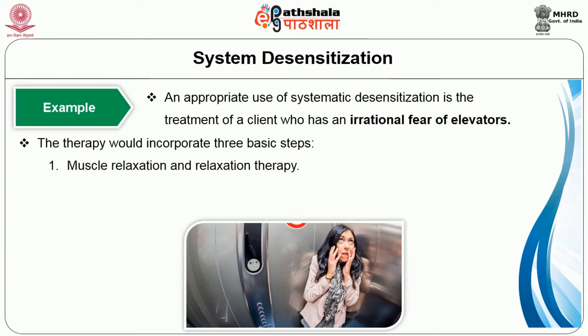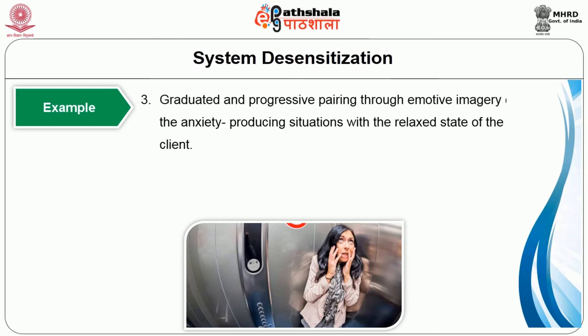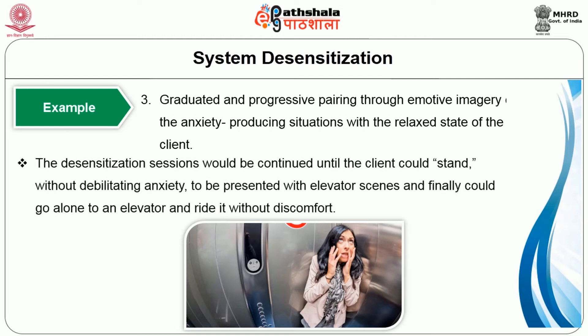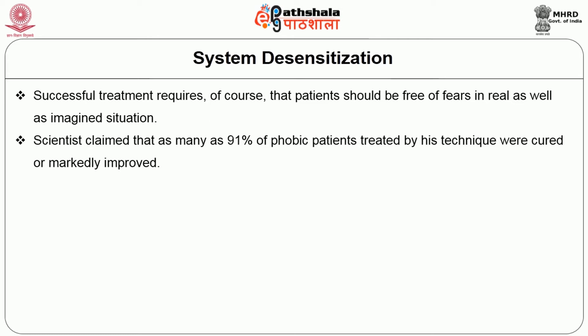The first step is muscle relaxation and relaxation therapy. The second is the construction of a hierarchy representing the anxiety-producing situations the client needs to overcome. The third is graduated and progressive pairing through emotive imagery of the anxiety-producing situations with the relaxed state of the client. The desensitization sessions would be continued until the client could withstand without debilitating anxiety being presented with elevator scenes and finally could go alone to an elevator and ride it without discomfort. Successful treatment requires that patients should be free of fears in real as well as imagined situations.